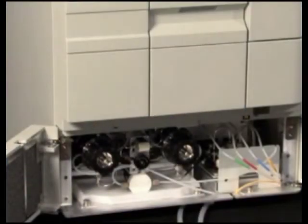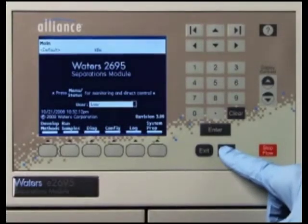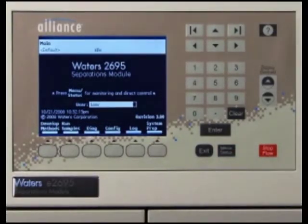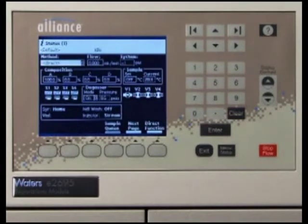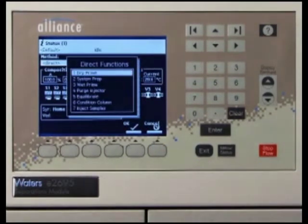To prime the solvent management system, you will need to perform a dry prime. Begin by pressing the menu status key to enter the status screen. Press the direct function screen key and the direct functions menu appears. Select Dry Prime, then press OK.